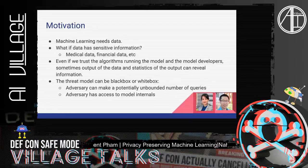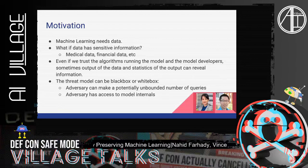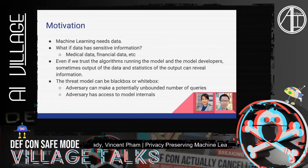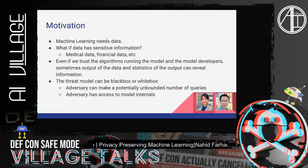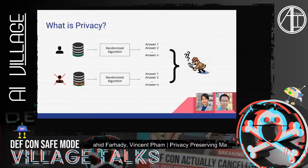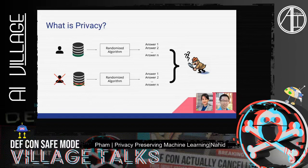Machine learning needs data. So what if this data has sensitive information like medical data or financial data? Even if we trust the algorithms generating the model or the model developers, sometimes just by using statistics and looking at the output of a model, we can find out some information about the input of the model. This type of threat to ML can be black box or white box, meaning that the adversary doesn't necessarily need to have any access to the model specifics. Privacy means that if we are using some data from our users for training a model, just by looking at the output, no one should be able to get information on the input of the model.